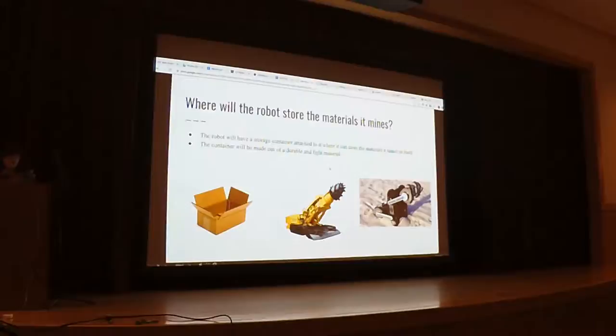Where the robot will store its materials that it mines? The robot will have a storage container attached to it where it can store materials and it mines on itself. The container will be made out of a durable and light material, most likely titanium. It will kind of look like a cardboard box.